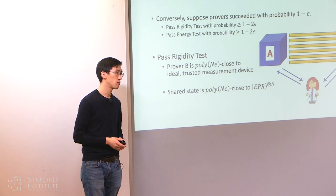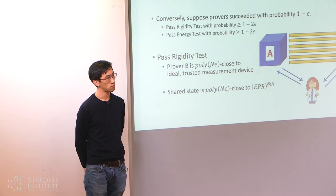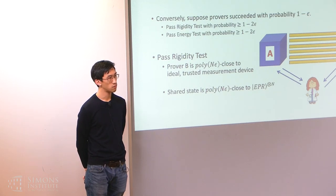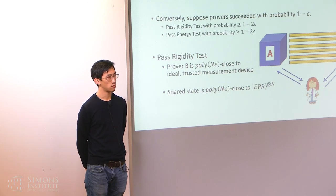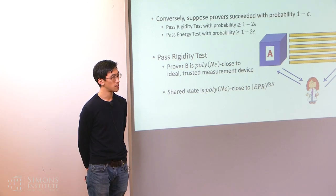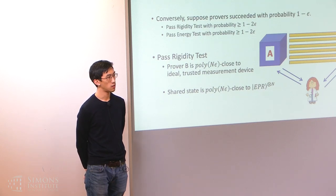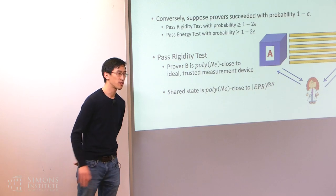Regarding the connection to QKD: the reduction is reminiscent of QKD security proofs, where you test devices to ensure EPR pairs between sender and receiver, then use Ekert 91. In QKD there's a beautiful reduction using CSS codes to make it practically realizable. If you employed codes instead of the magic square game, might you simplify measurements and reduce it to something more practically realizable? The speaker is not very familiar with this QKD reduction and would be interested to discuss during the break.